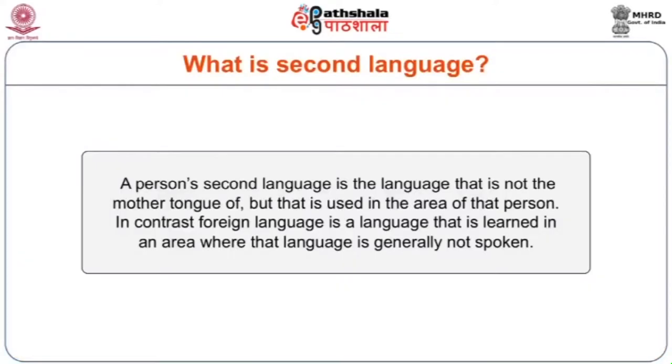Before establishing English as a second language, many people ask which language should be termed the second language and why. A person's second language is a language that is not the mother tongue of that person but is used in the area of that person. In contrast, a foreign language is learned consciously in an area where that language is not generally spoken. That is the particular difference between a second language and a foreign language. So we have three things: mother tongue, second language, and foreign language.